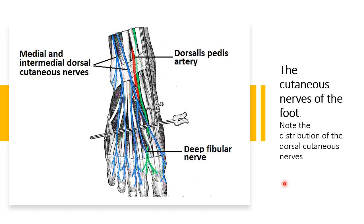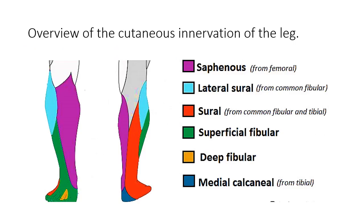The sensory function of the deep fibular nerve supplies the dorsum of the foot at the web space between the great toe and the second toe. The superficial fibular nerve provides cutaneous innervation to most of the dorsum of the foot via its medial and intermediate dorsal cutaneous nerve branches, except for that specific web space area.